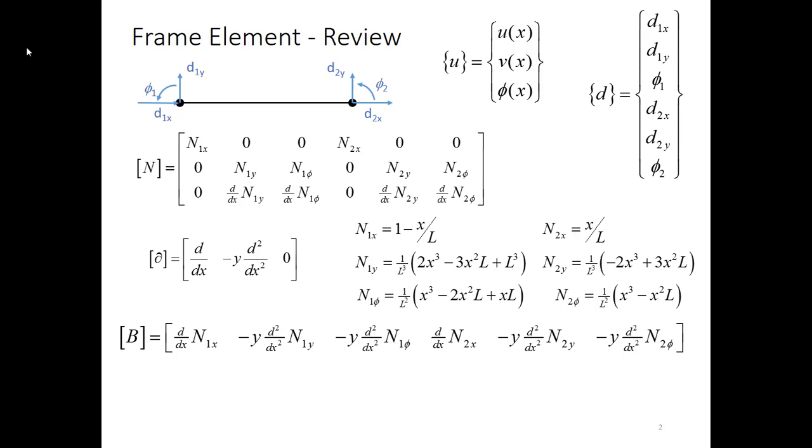Then we have the B matrix that was derived. The B matrix is simply the product of the partial derivative matrix operator and the n matrix. When we evaluate each of the shown shape functions in all the integrals, we get this expression for B.